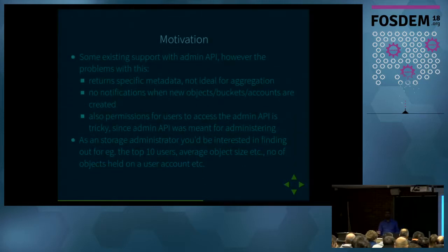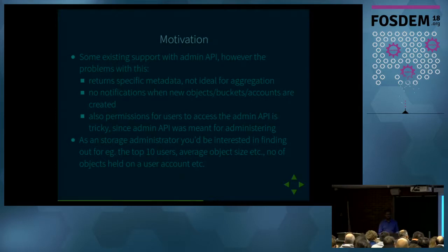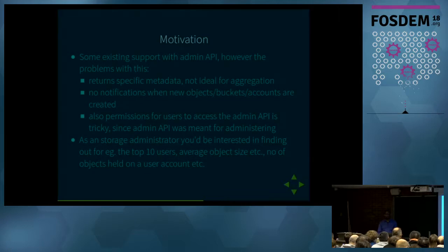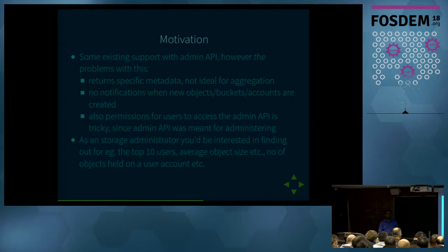We have some support for this via the Rados Gateway admin API — you can get specific metadata when you query for it. But the problem is it's very specific: if you ask for a specific bucket or specific object's metadata, we'll give it to you, but that doesn't lend itself very well for analysis. You also have no notifications when new objects, new buckets, or new accounts are created, so you have to constantly poll at very large scale. This is where Elasticsearch comes in because it has built-in primitives for slicing and analyzing data.